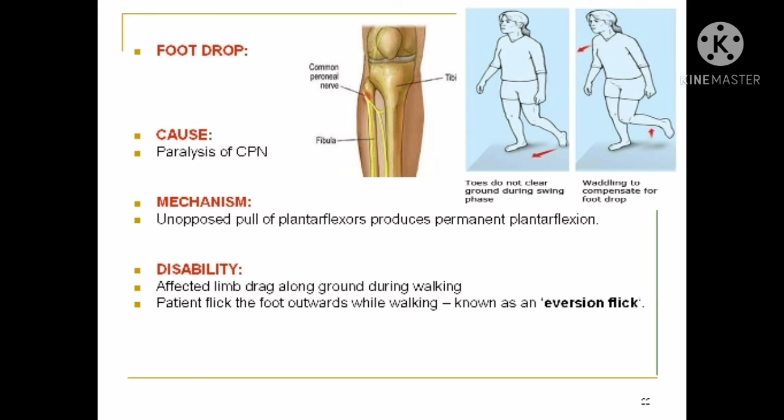Foot drop — the cause is paralysis of the common peroneal nerve, as shown in the diagram. The mechanism is unopposed action of the plantar flexors, which produces permanent plantar flexion. The disability is that the affected limb drags along the ground during walking. The patient flicks the foot outwards while walking, known as an eversion flick.